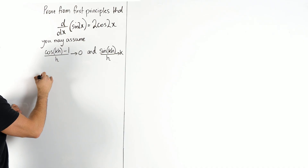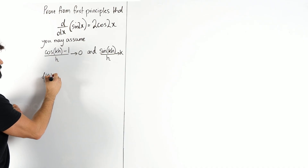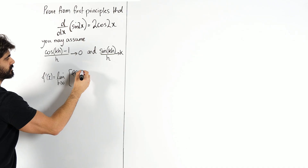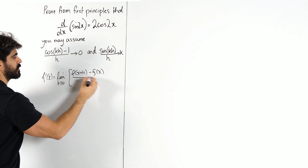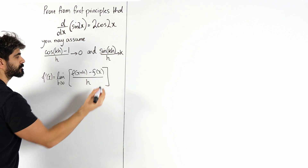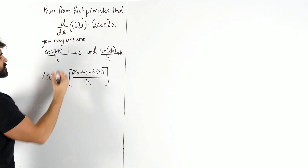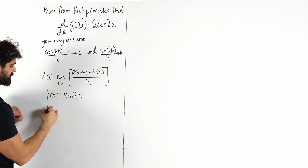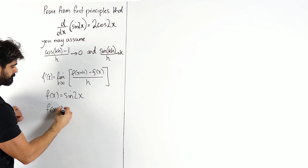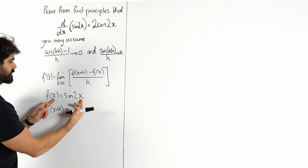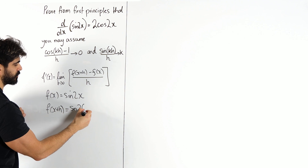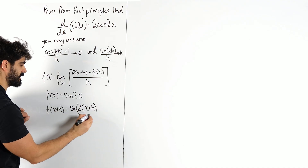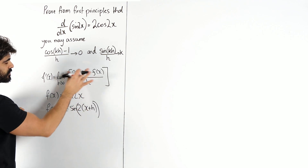The first principles formula tells us that f'(x) is the limit as h tends to 0 of f(x+h) minus f(x) all over h. In our case f(x) is sin 2x, so what would f(x+h) be? All you're doing is replacing x with x+h, so it becomes sin of (2x+h). I'm going to put a double bracket here because this is the whole angle, and we're going to substitute these into the formula.